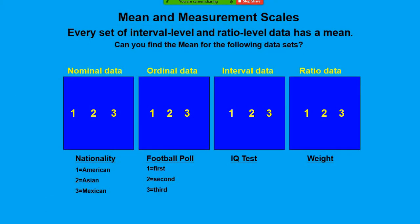Every set of interval level or ratio level data has a mean. How about nominal or ordinal data? Let's take a look. Here in the nominal data set, we only have one, two, three assigned to different nationalities. Can we find the data for this? The answer is no, because it doesn't make sense if we find the average nationality. How about in ordinal data, football poll—first, second, third—does it make sense to find the mean? The answer is no. It does not make sense because these are just orders and ranks.